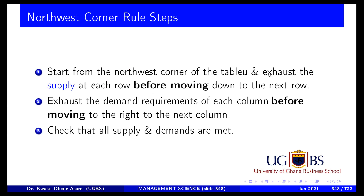Pay attention here. For the Northwest corner rule: you start from the northwest corner of the transportation table, exhaust the supply at each row before moving down to the next row, then exhaust the demand requirement of each column before moving right to the next column. At the end, you check that all supply and demand requirements are met. We want to find the minimum distance using the Northwest corner rule.